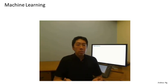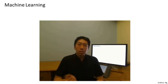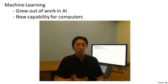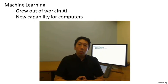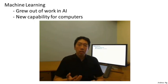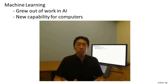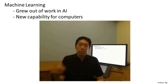So why is machine learning so prevalent today? It turns out that machine learning is a field that had grown out of the field of AI, or artificial intelligence. We wanted to build intelligent machines, and it turns out that there are a few basic things we could program a machine to do, such as how to find the shortest path from A to B.